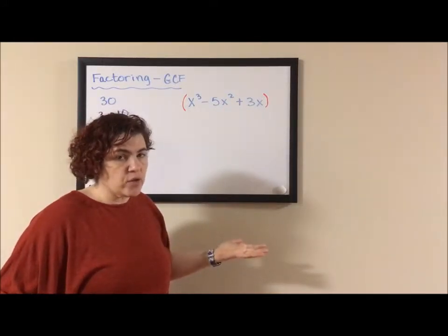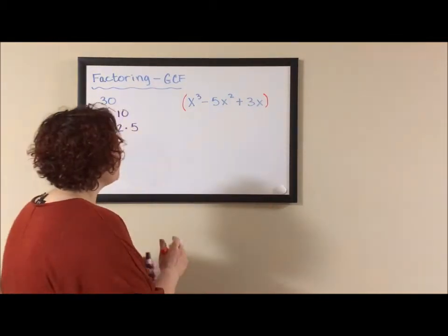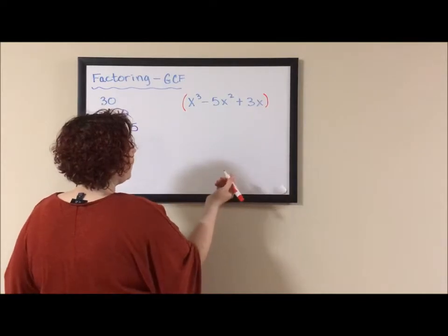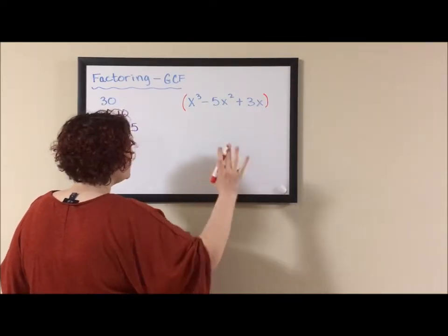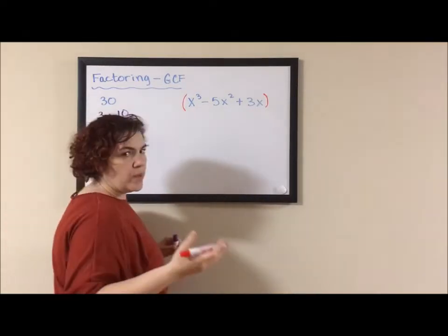Eventually, you'll learn other ways to factor a trinomial, but for now we are just focusing on greatest common factor. If I look at these, I notice that an x comes out of all of them. Now, there's lots of ways of writing this. You can just go ahead, put the x out front, parentheses, and write your trinomial reduced.